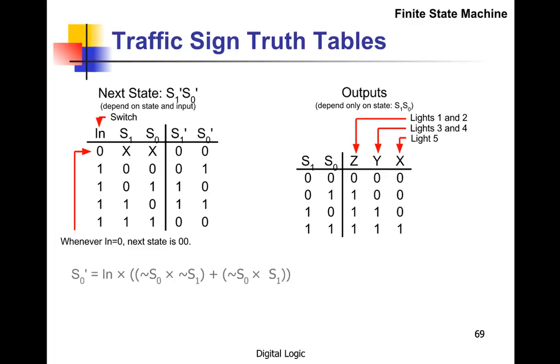We need to put those truth tables into equations. So here's the equation for S0 next state. We need to look where it's a one—here's a one and here's a one. So we're going to OR two things together. Everything has to have In on it, so I'm just going to say In, and then I'm going to OR a couple things together. In AND—this is S1 not and S0 not, so that's this first term.